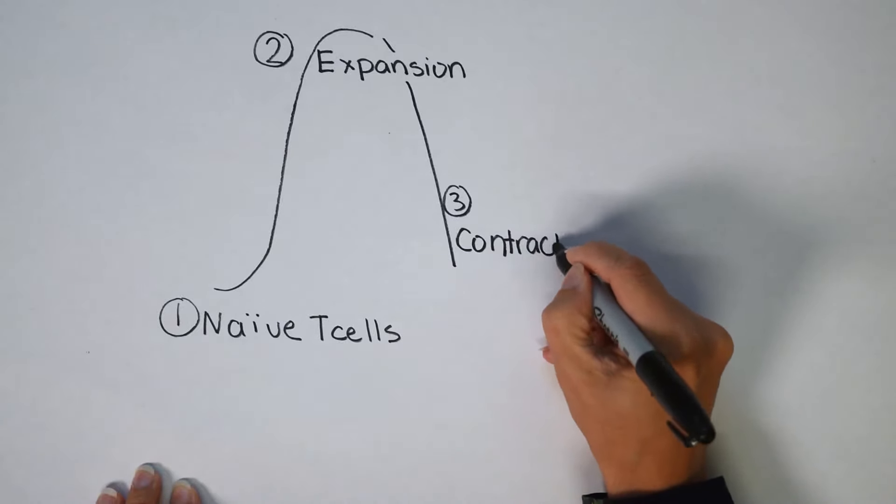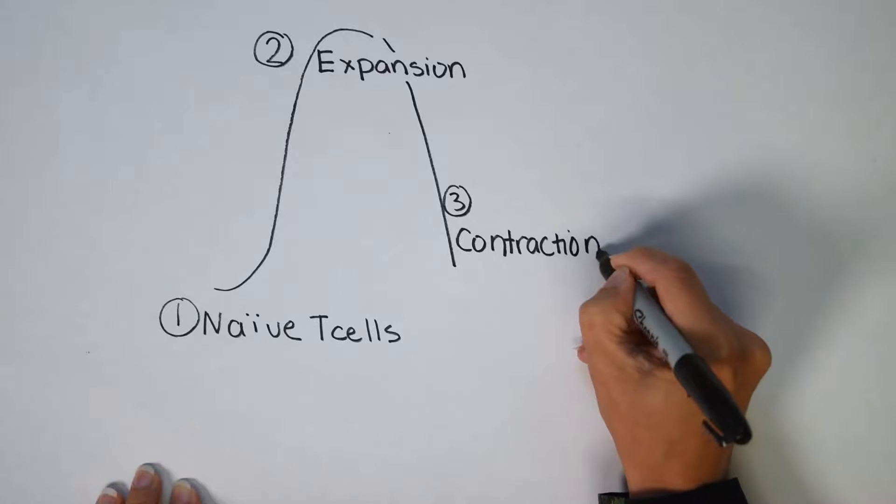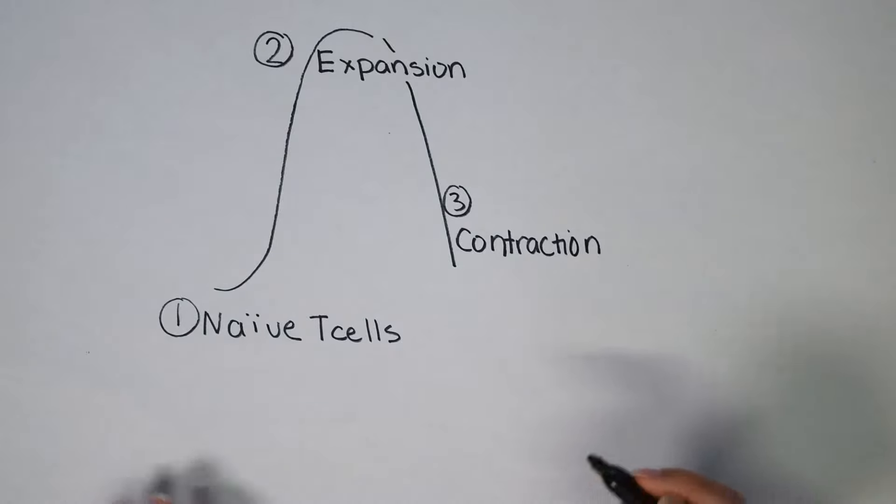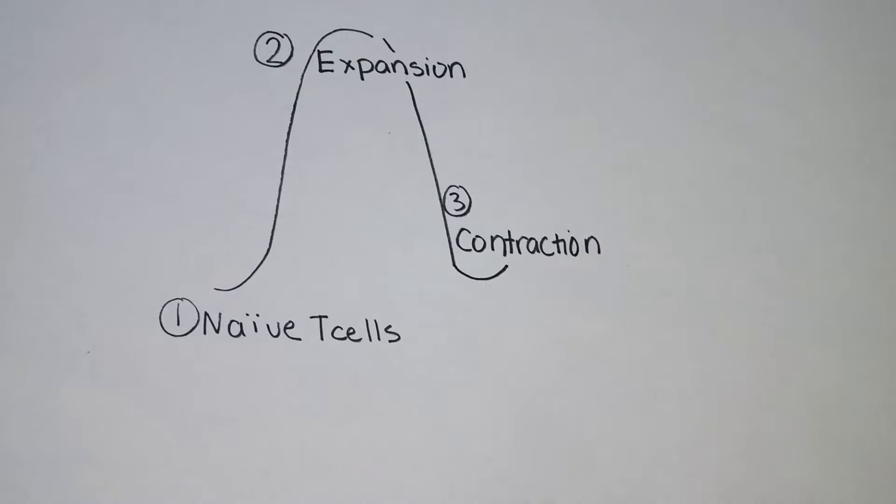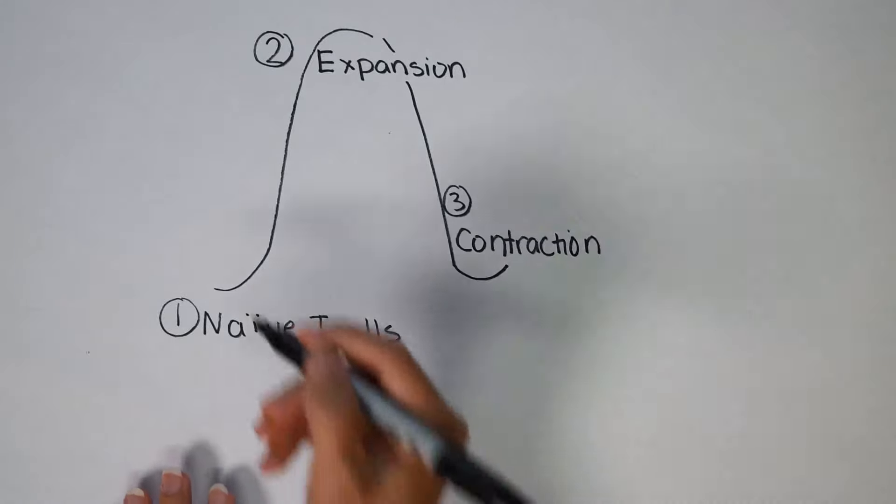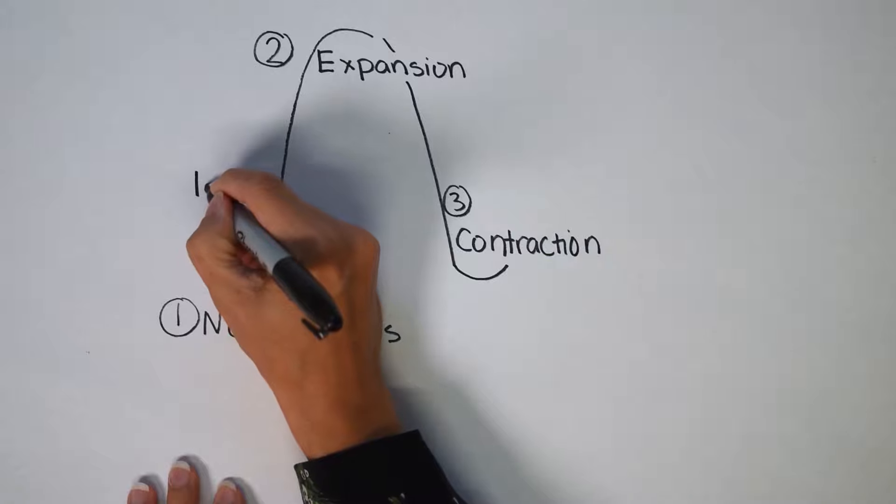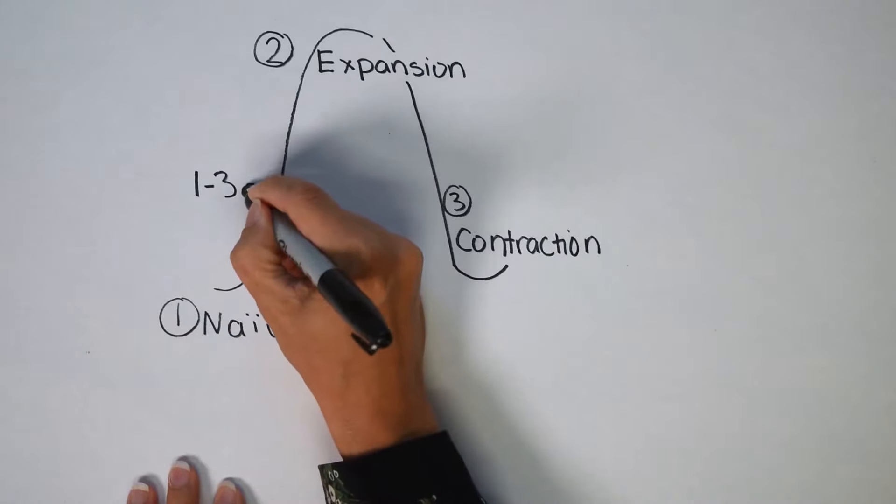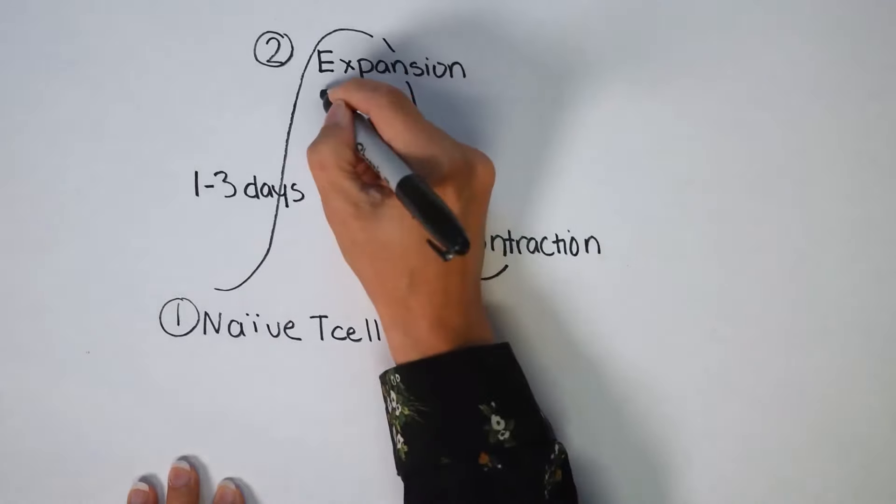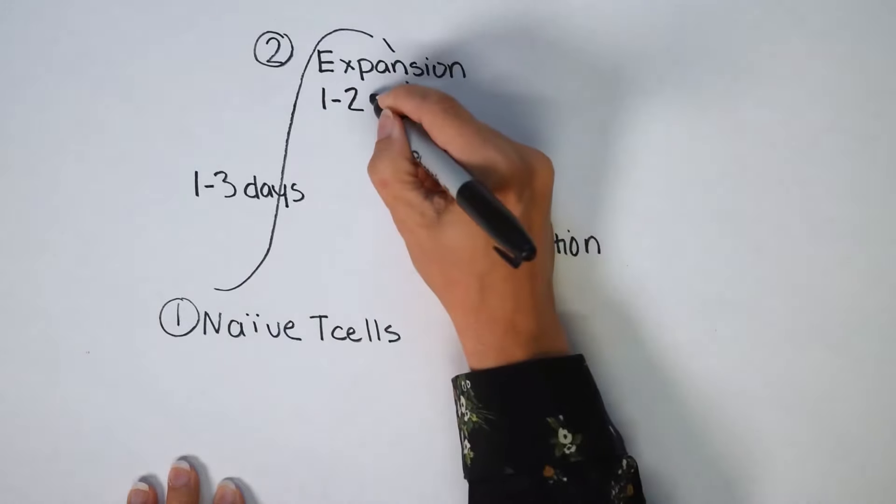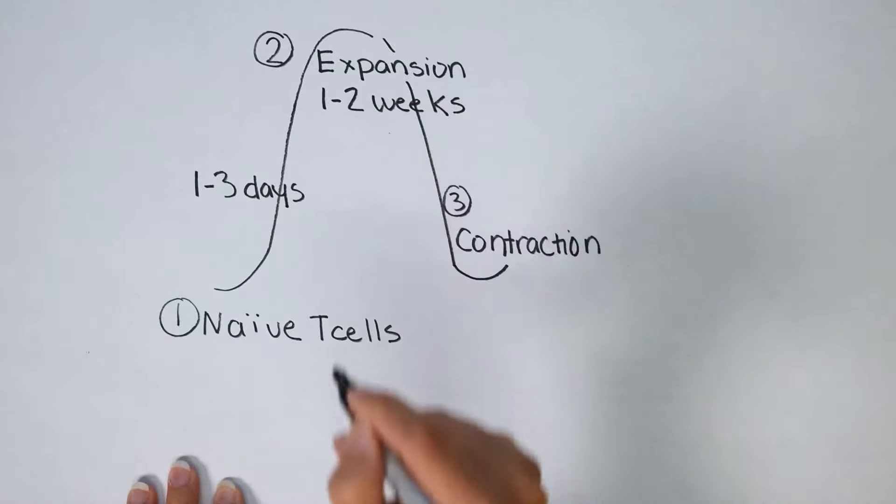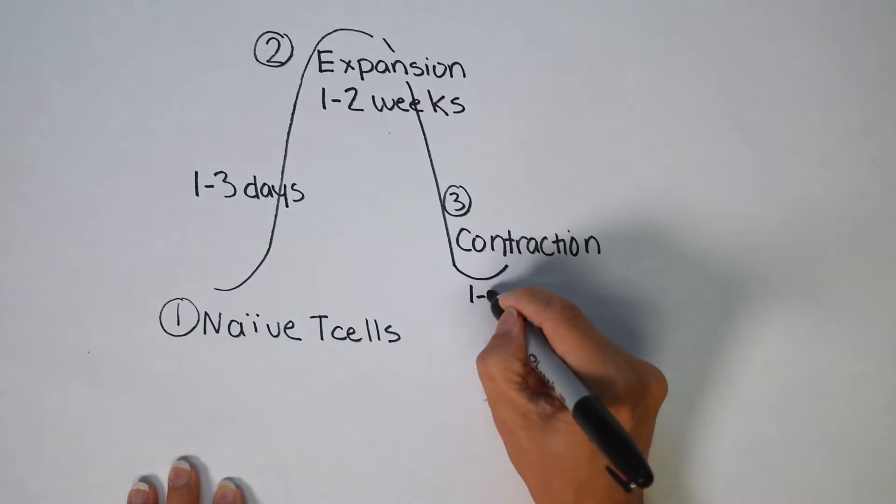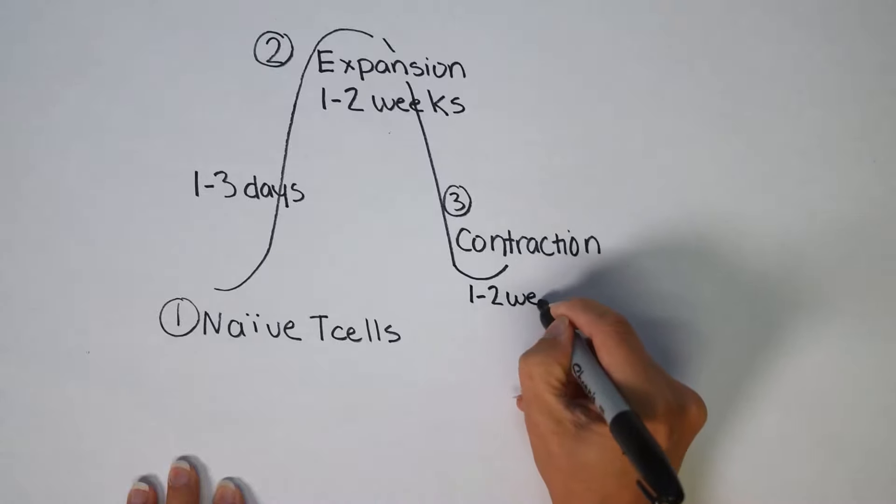Now the process going from a naive T cell to expansion can take approximately one to three days. Expansion can take between one to two weeks. And then lastly, there's the third phase called contraction. Contraction also takes between one to two weeks. And that's important because you lose approximately 90 to 95% of the T cells that were created due to the naive T cell activation.